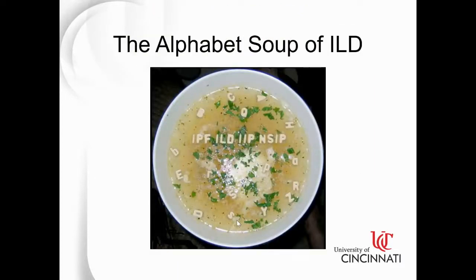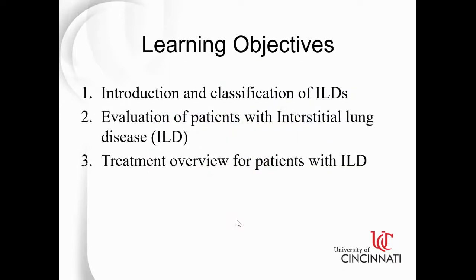To make matters complex, when you see someone with interstitial lung disease and talk to a pulmonologist or radiologist, they will come up with some three-letter word — IPF, ILD, IIPs, NSIP. There is a whole alphabet soup of ILD terminology which makes it very confusing. So it's important that internal medicine doctors recognize the subgroups of ILDs and what they mean. My main learning objectives will be: an introduction and classification of ILDs, evaluating a patient with ILD, a focus on IPF, and an overview of treatment with recent progress.